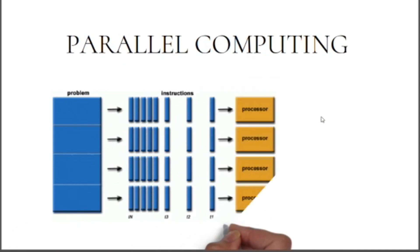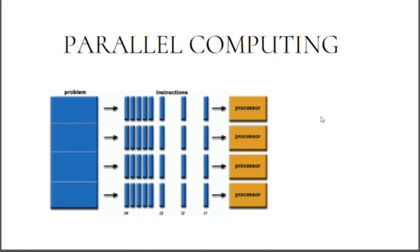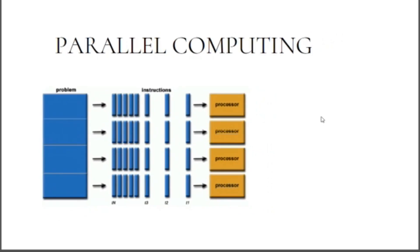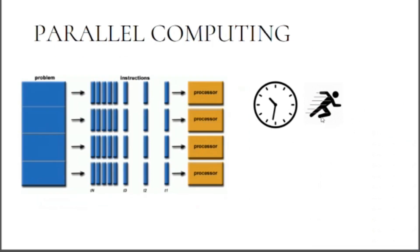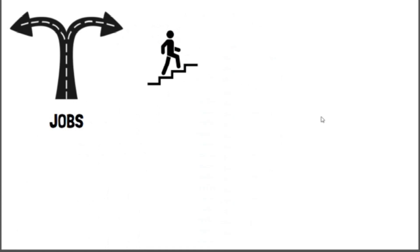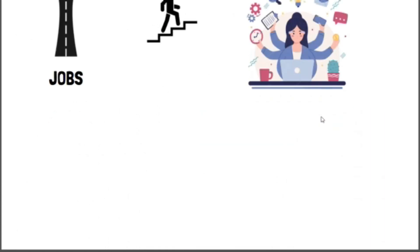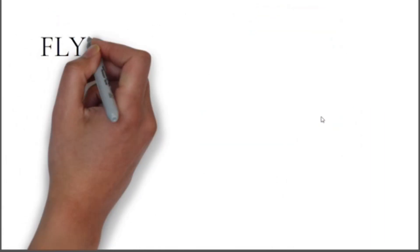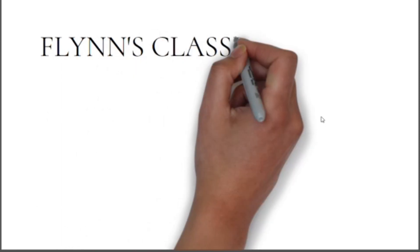In parallel computing, tasks which take a lot of time and are much bigger can be solved in a very quick manner. Jobs are broken down into different steps which can be executed side by side, just like multitasking. Based on this concept of parallel computing, Flynn's classification was introduced.